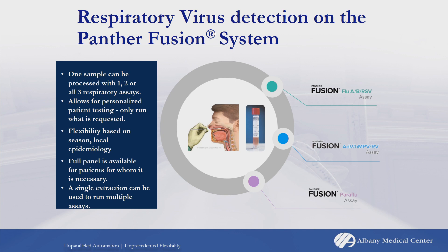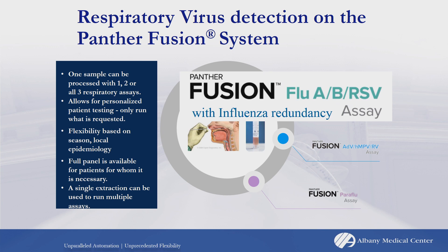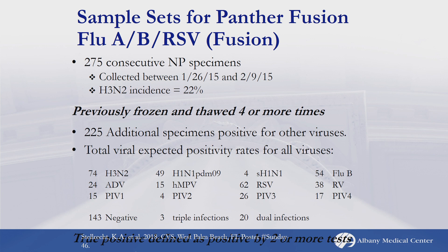We evaluated all these assays; last year at the workshop I presented some preliminary influenza data, but now I have the complete study results. There will be a higher focus on the influenza assay because the Panther Fusion uses influenza redundancy — two different target regions with multiple probes. For our evaluation of the Flu AB/RSV assay, we used the same 275 consecutively collected samples from our previous studies where influenza incidence was 22%. We also added an additional 225 samples for a total of 500, capturing all the different other viruses. A true positive was defined as any sample positive by two or more tests.